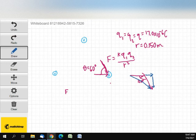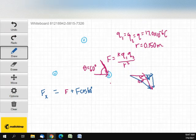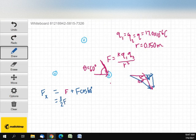In the X direction, now this is 60. In the X direction, I've got F plus F cosine 60. And the cosine of 60 degrees is one-half. So, F plus half of F is just going to be three-halves F.